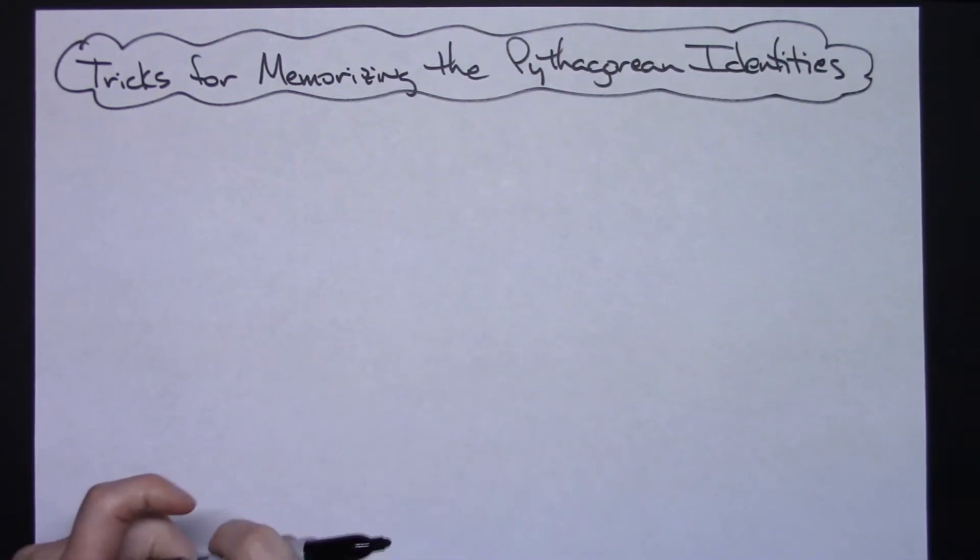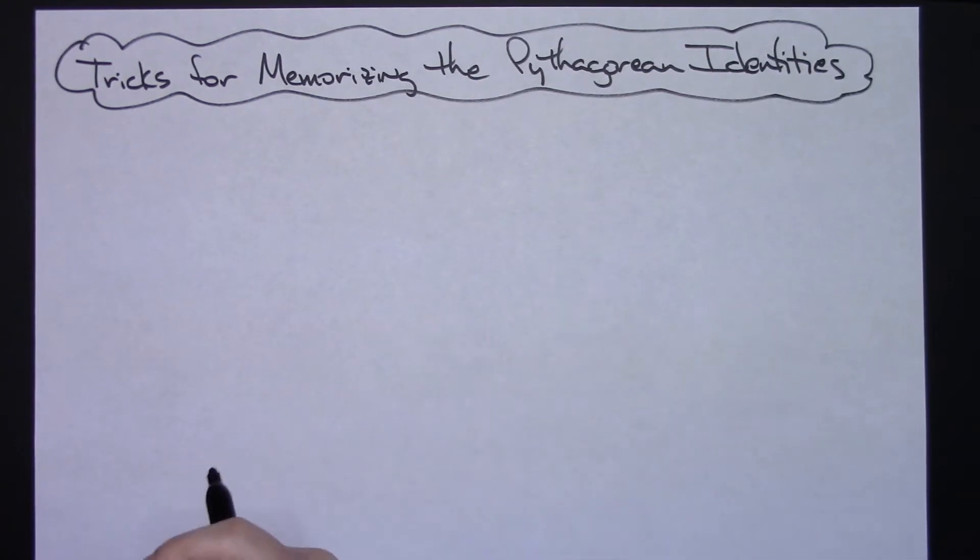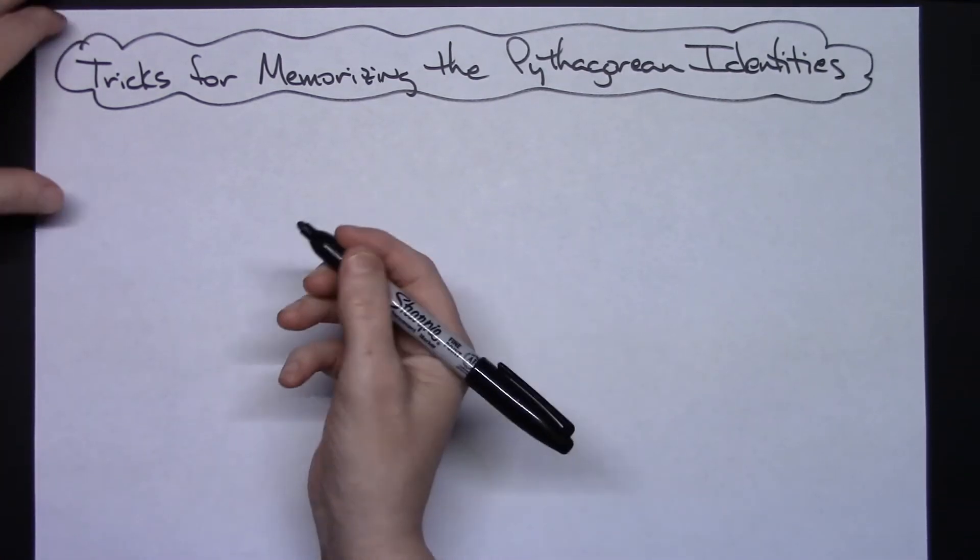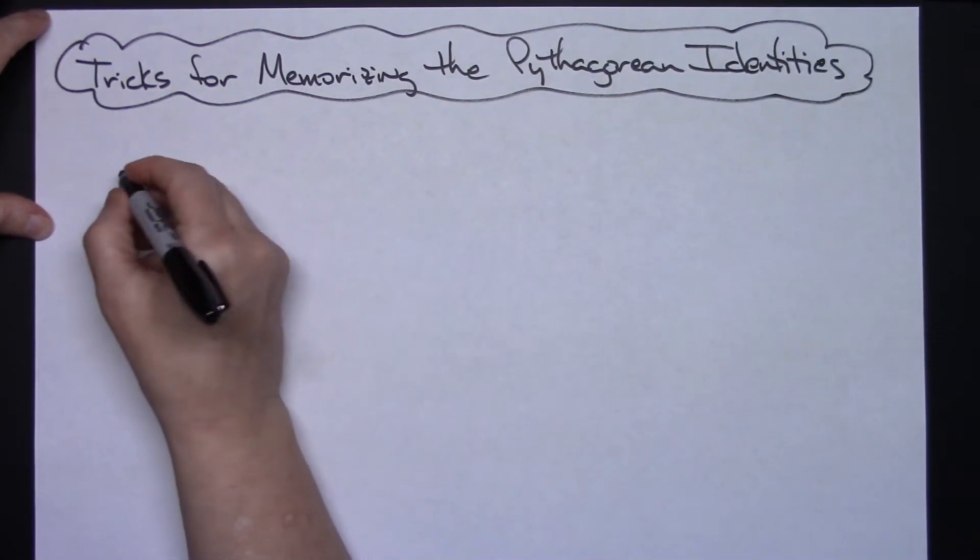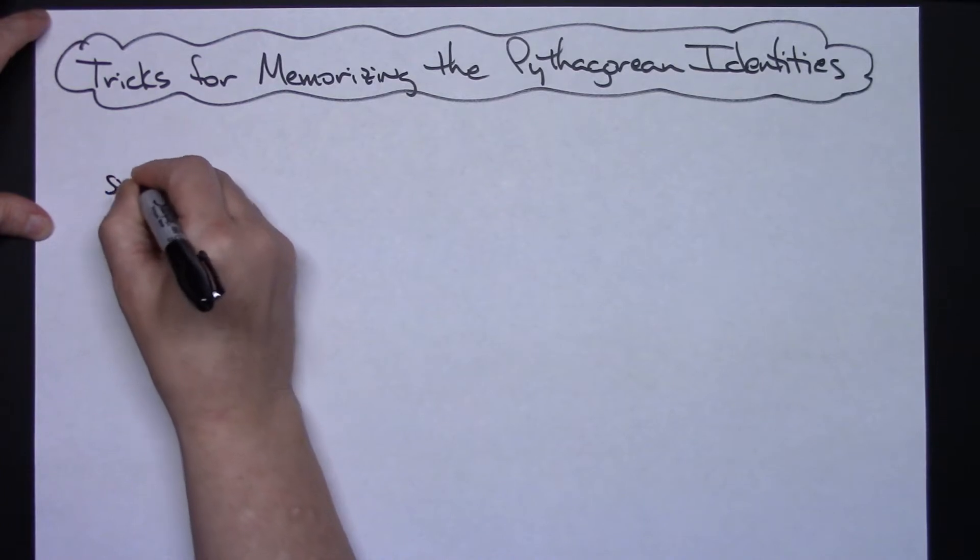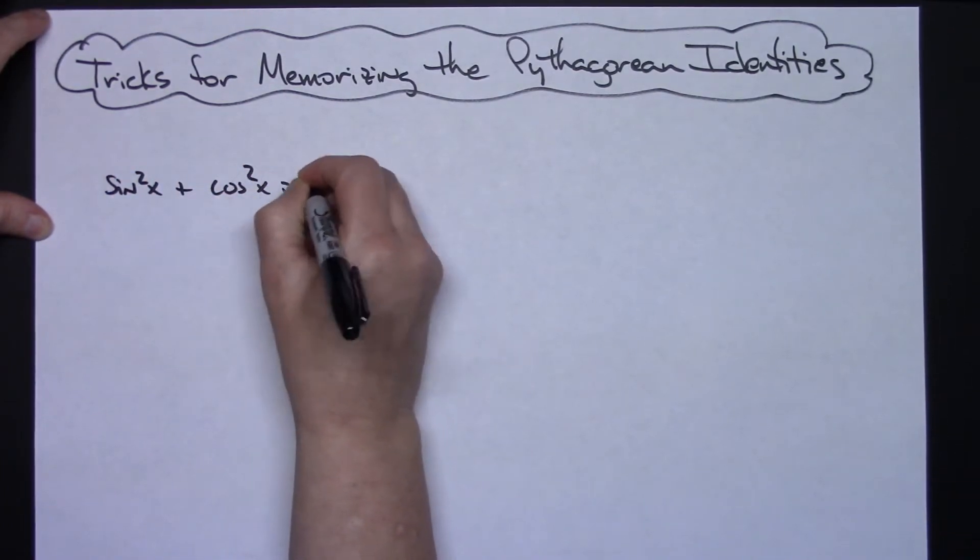In this video I'm going to show you two different tricks for memorizing the Pythagorean identities. There are three of them and I'm assuming that the very first one, which is the most common one, you will not have trouble just knowing. It is sine squared x plus cosine squared x equals 1.